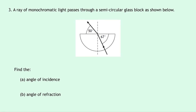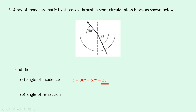Question 3 says a ray of monochromatic light passes through a semi-circular glass block. This time the light is travelling from the glass block out into air and changing direction. For part A, the angle of incidence is between the normal and the incident ray; using the 90-degree relationship, it's 90 minus 67, giving 23 degrees. For part B, the angle of refraction is 90 minus 50, which gives 48 degrees.